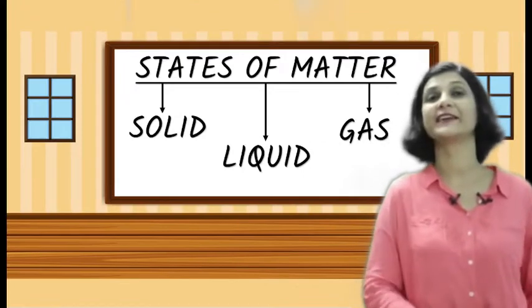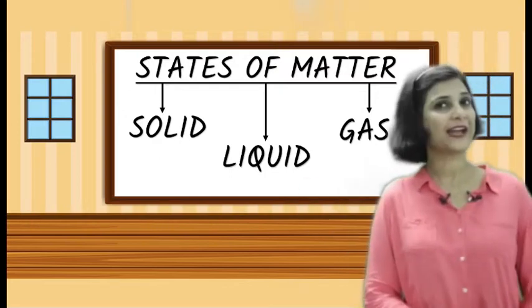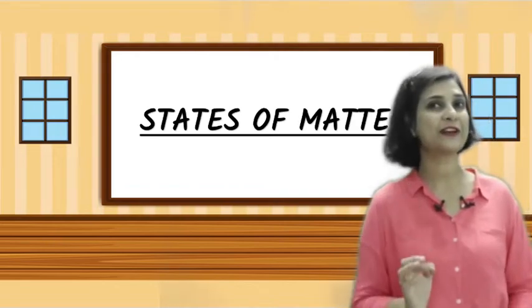There are three different forms or states of matter. The things around you are in three states: some are solids, some are liquids, and some are gases. The air that you breathe is a gas — you can feel it, it floats all around you. The water you drink is a liquid — it flows smoothly down your throat. The book you read is a solid — you can hold it in your hand and it has a proper shape.